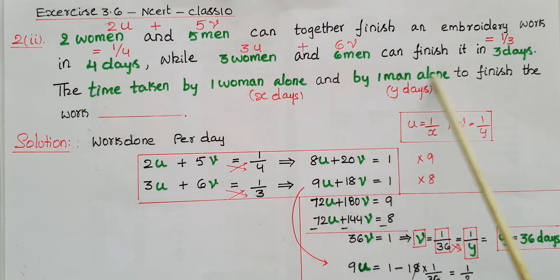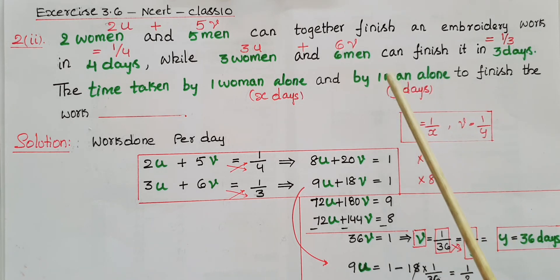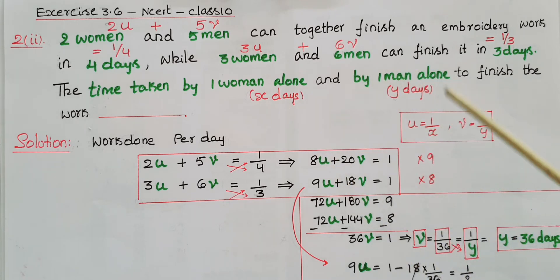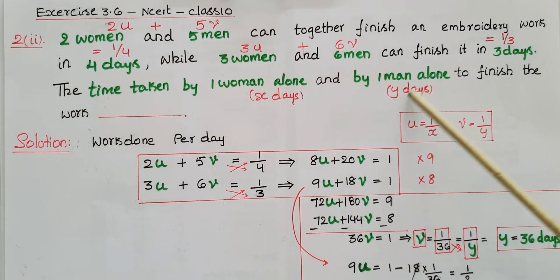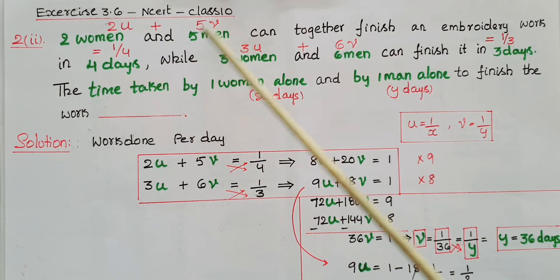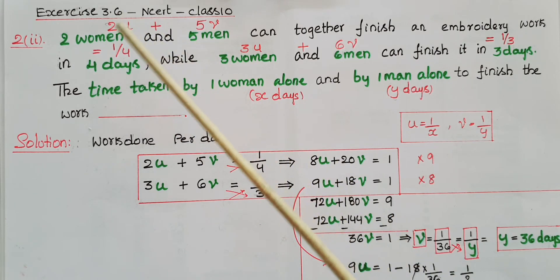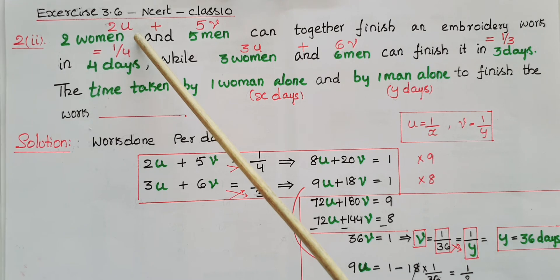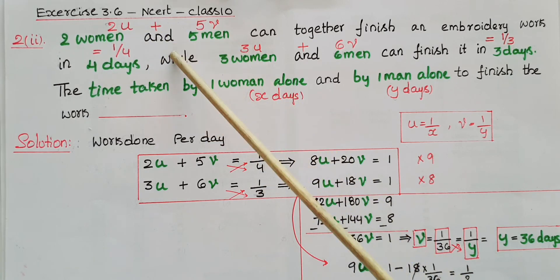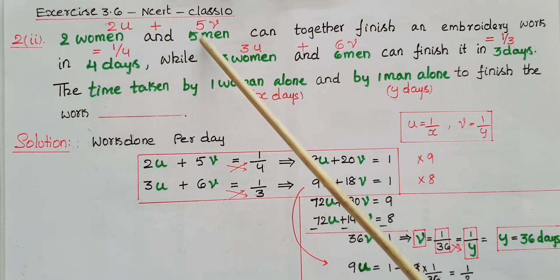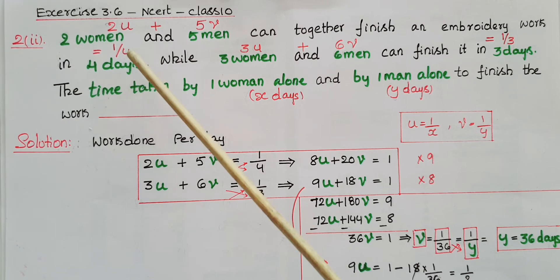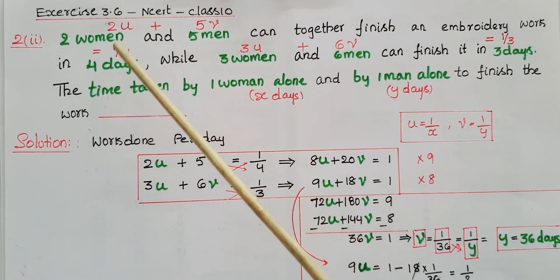Per one day, the work done by one woman is one-by-x and per day a man's work is one-by-y. For two women and five men: two into one-by-x is two-u, and five into one-by-y is five-v. Together they finish in four days, so per day they do one-fourth of the work. Therefore, the first equation is: 2u plus 5v equals one-by-four.